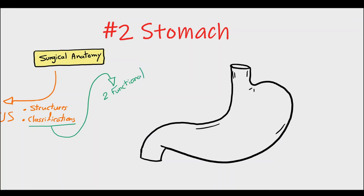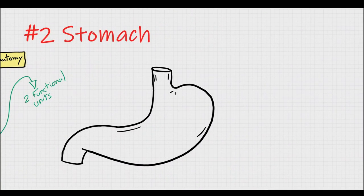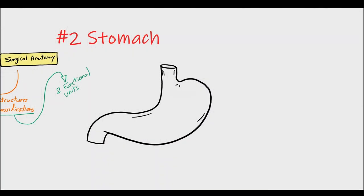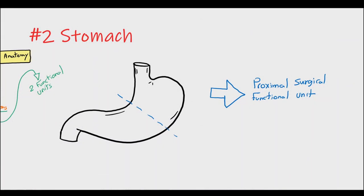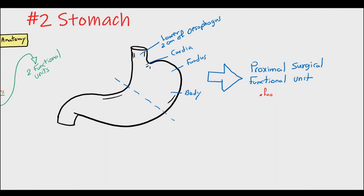For example, the stomach. Anatomically, it's divided into three main regions: the fundus, the body, and the antrum. But from a surgical point of view, we can divide the stomach into two functional units. The proximal surgical functional unit consists of the lower 2 cm of the oesophagus, or the abdominal oesophagus, the cardia or the gastroesophageal junction, the fundus, and the greater part of the body.